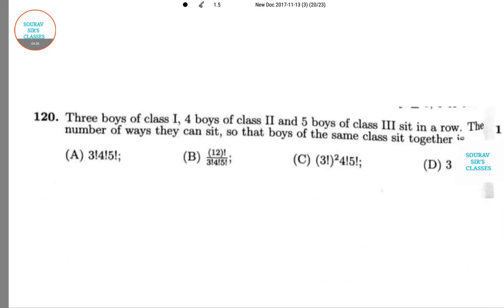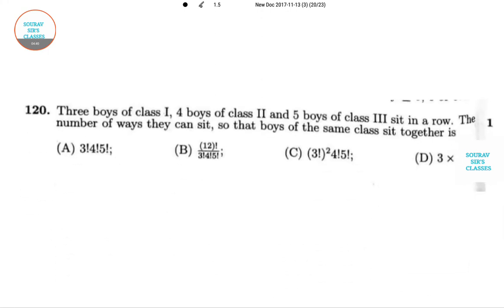Next question is the very next one, that is 120. So here there are boys in the class: 3 boys in class 1, 4 boys in class 2, and 5 boys in class 3 sit in a row. There is a very small number of students in a class. The number of ways they can sit so that the boys of the same class sit together. It is very easy. So let us take boys of each class as one unit.